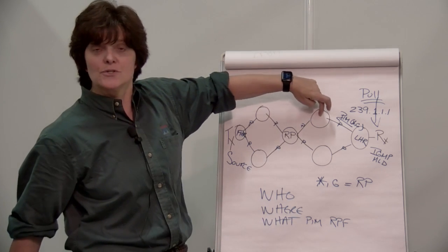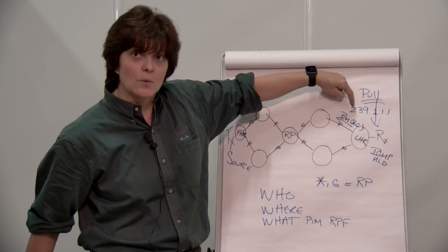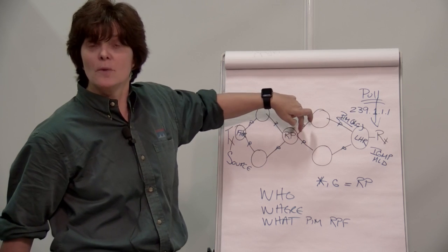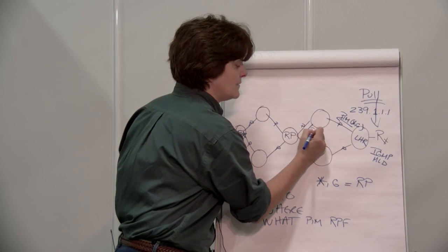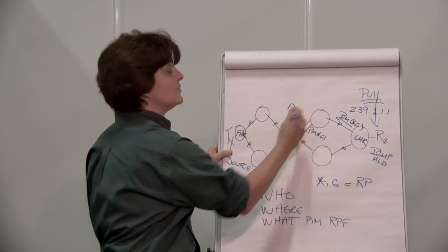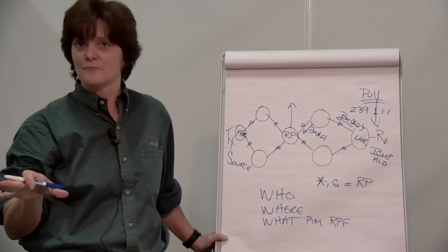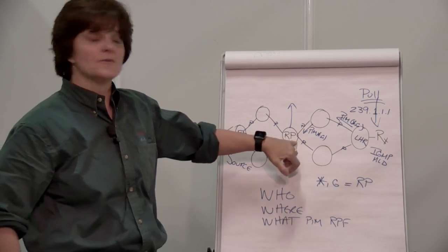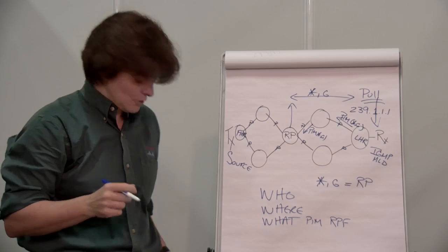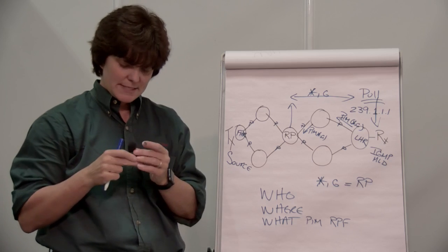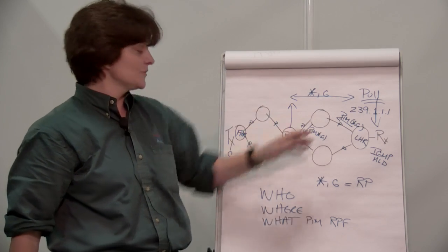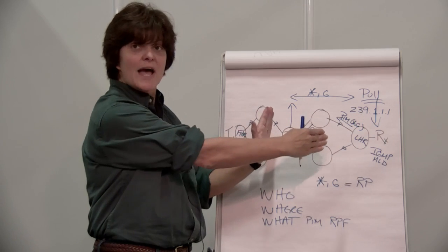Then he asks the same questions: who's the root for 239.1.1.1? Where's the root? What is the PIM RPF neighbor for that? Then he builds the PIM star-comma-G join. And here at the rendezvous point, regardless of vendor or platform, this is the rendezvous point. The shared tree — also called the RP tree — is between the rendezvous point and down here, and now we have that built. We know that there is somebody out this interface that wants that multicast.